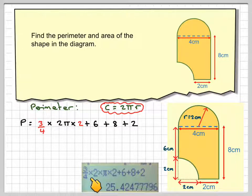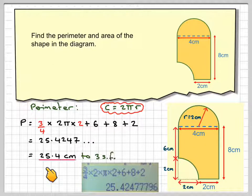So that can all be entered onto our calculator. 3/4, 2 × π × 2, plus 6, plus 8, plus 2, and that will give me the answer straight away is 25.4. And then final answer rounded off to three significant figures is 25.4 centimetres to three significant figures.